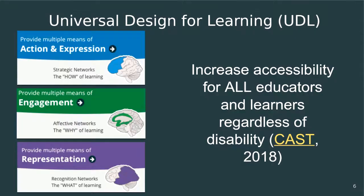Universal design for learning is an accessibility framework that addresses accessibility by helping people with and without disabilities become people with abilities — both in terms of access to content, understanding it, and formatting as well. There are three main principles. We'll refer to it as UDL: to provide multiple means of action and expression — the how of learning; engagement — the why; and representation — the what of learning. The connection we're making with sustainability is that UDL increases sustainability by helping educators create and use accessible and sustainable materials and resources that enhance a learner's ability to engage and learn.